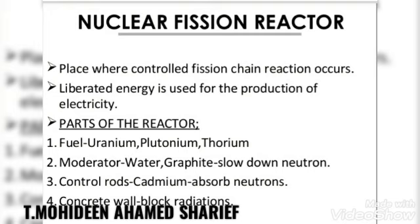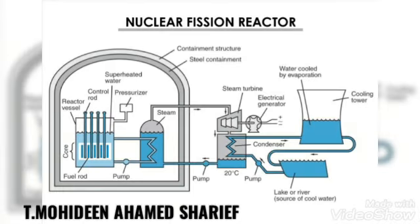A nuclear reactor is a device in which a nuclear fission reaction takes place in a self-sustained and controlled manner to produce electricity. The first nuclear reactor was built in 1942 at Chicago, USA. There are several types of nuclear reactors: breeding reactor, fast breeder reactor, pressurized water reactor, pressurized heavy water reactor, boiling water reactor, water-cooled reactor, gas-cooled reactor, fusion reactor, and thermal reactor.